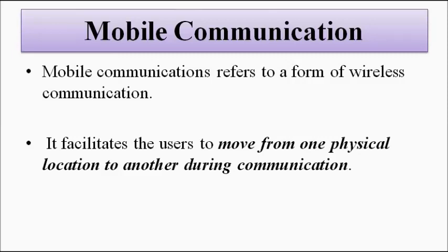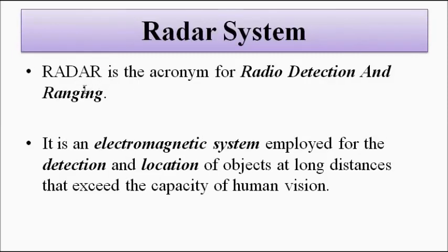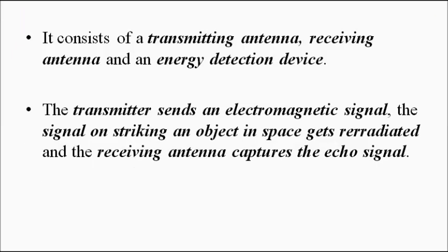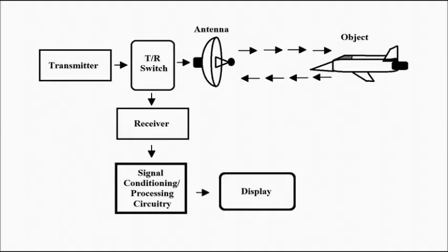Radar — Radio Detection And Ranging — is used for detecting or locating objects at long distances that exceed the capacity of human vision. It consists of transmitting and receiving blocks and an antenna that transmits electromagnetic signals in the radio frequency range. When these signals strike an object in space, they get re-radiated, and the time of propagation gives us the location of the object along with parameters such as elevation and azimuthal angle.